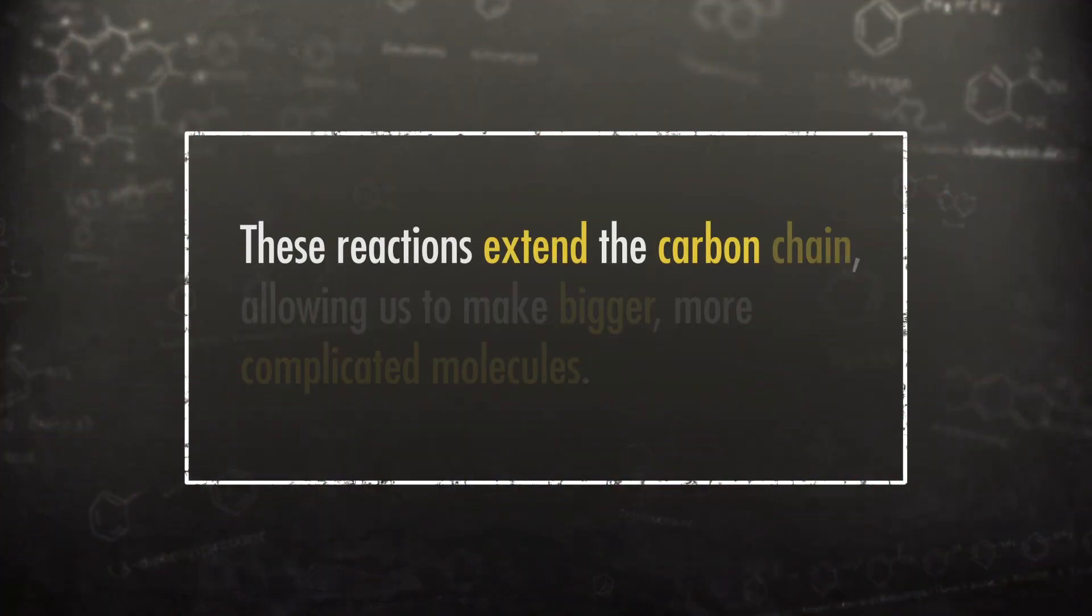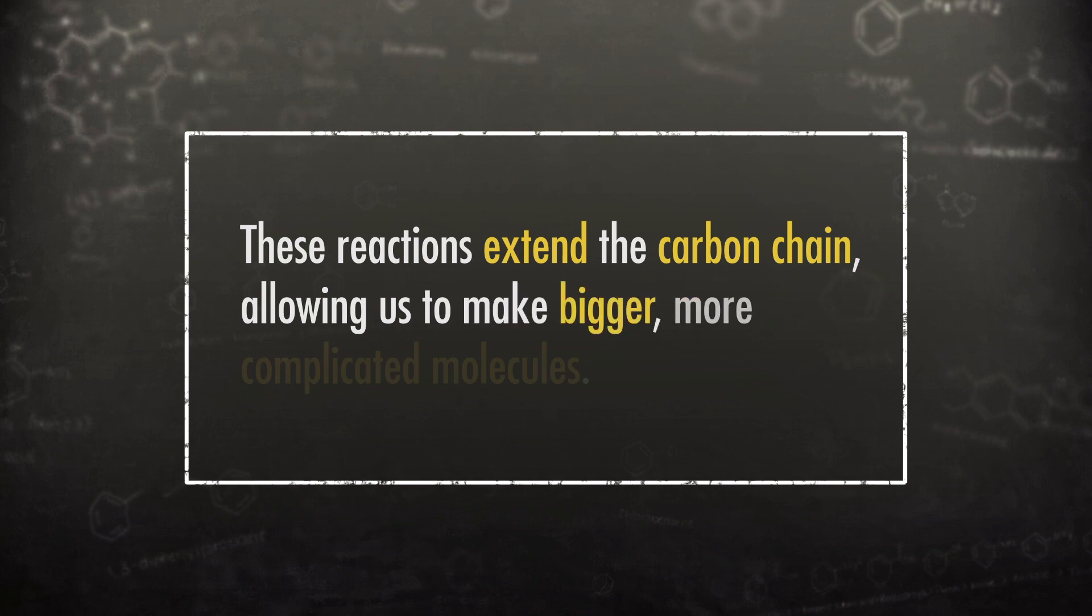Thanks to the polar CO bond in a carbonyl group, the carbonyl carbon has a partially positive charge. In episode 27, we talked about cyanide, acetylide anions, and the phosphonium ylids used in the Wittig reaction attacking this partially positive carbon. These reactions extend the carbon chain, allowing us to make bigger, more complicated molecules. And other nucleophiles can also attack the carbonyl group.